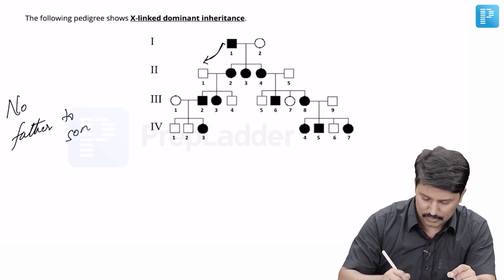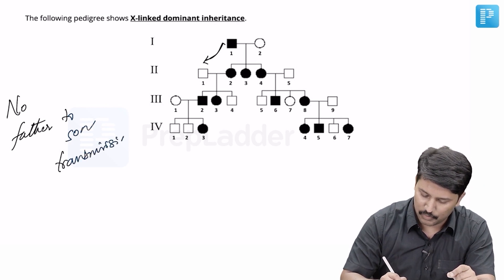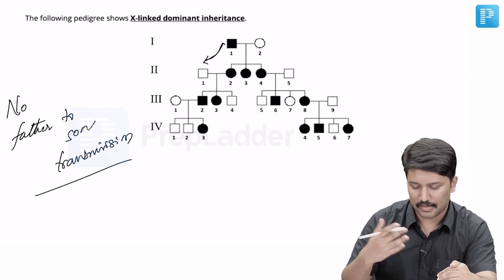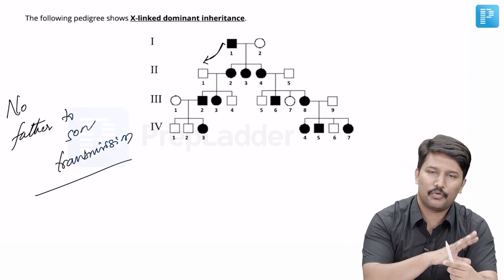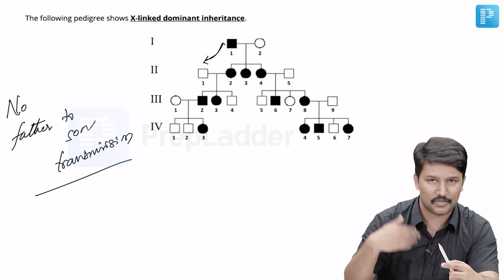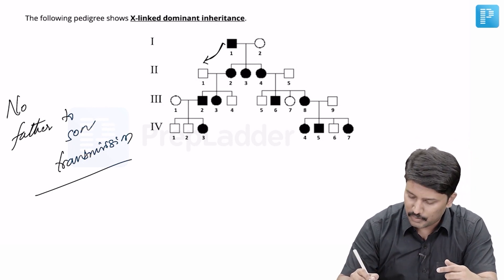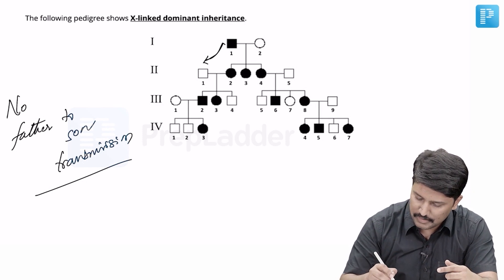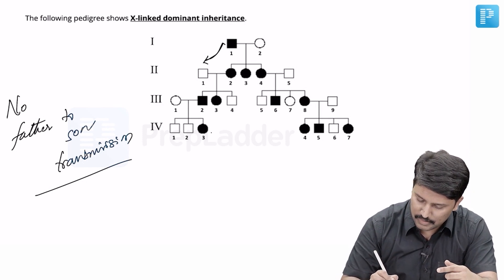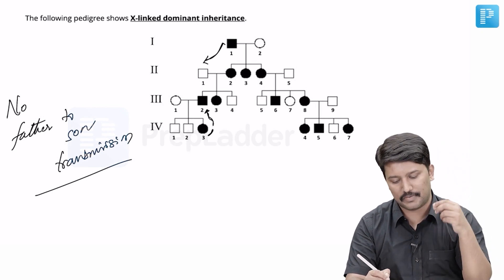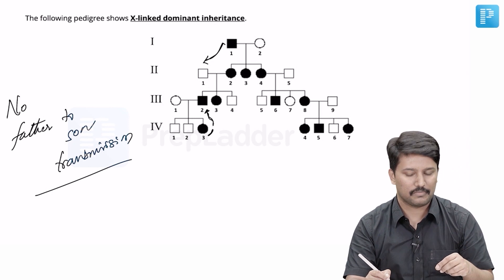Trace back from the distal-most part of the pedigree chart and see if you notice this pattern. First determine whether it is autosomal dominant or recessive. Once that is done, when you start tracing back, you notice here is an affected female — look back, the father is affected. So the father has transmitted the affected gene to the daughter.